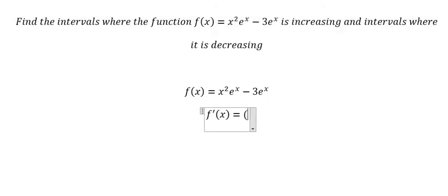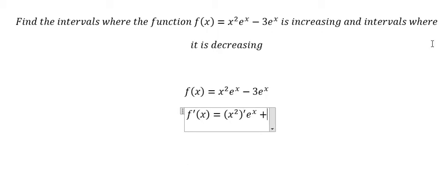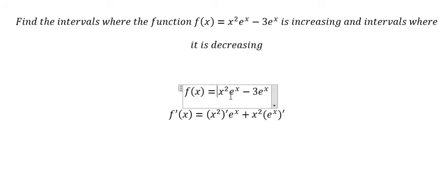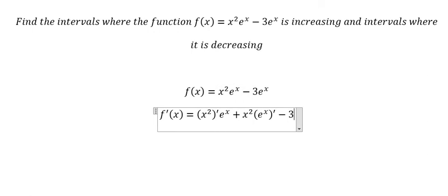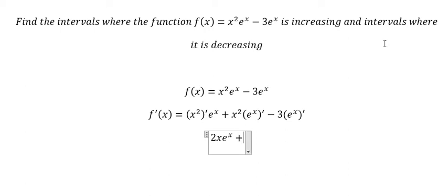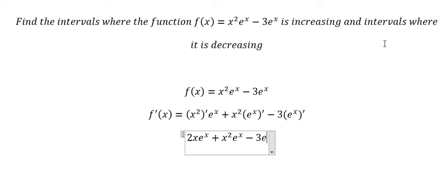We need to find the first derivative of x squared, then the first derivative of e to the power of x. This is about the product rule. We get: two x times e to the power of x, plus x squared times e to the power of x, minus three e to the power of x.